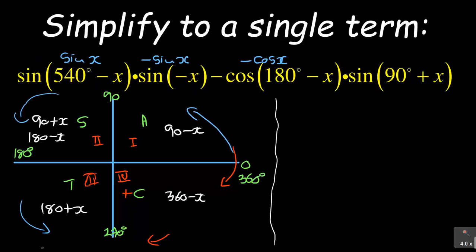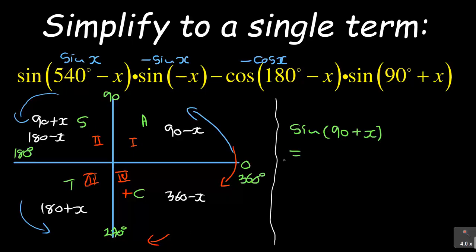Lastly, we have sine(90 + x). Whenever you are dealing with 90, you must know that you are dealing with co-functions — sine becomes cosine. Now, 90 plus x is in the second quadrant, and in the second quadrant sine is positive. So sine(90 + x) becomes positive cos(x), because we apply the co-function: sine becomes cos. That gives us cos(x).